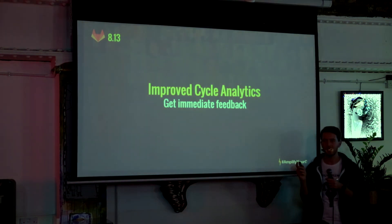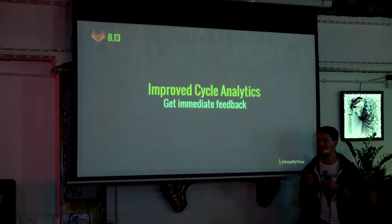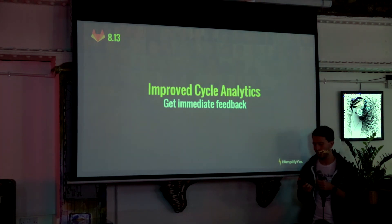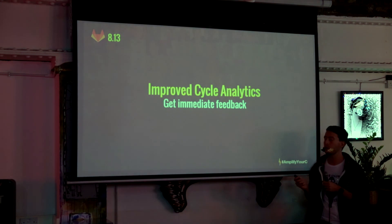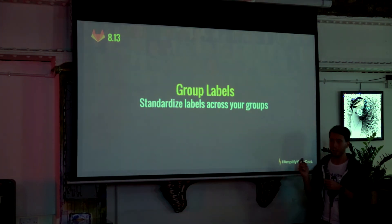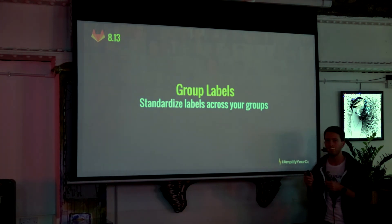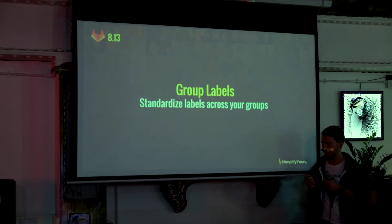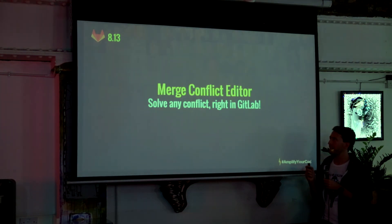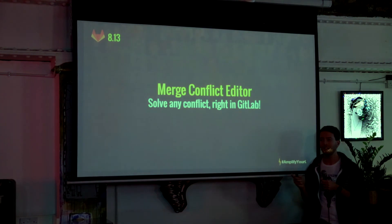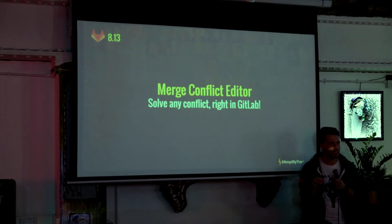We improved Cycle Analytics so it's actually useful — previously you didn't get data immediately, and now we'll make sure data appears right away. We're adding group labels, making it easier to manage labels across a group in GitLab. And I think the most exciting change, besides all the cool idea-to-production stuff, is a full merge conflict editor. Any kind of conflict you can now solve directly in GitLab — just edit it there and commit it.